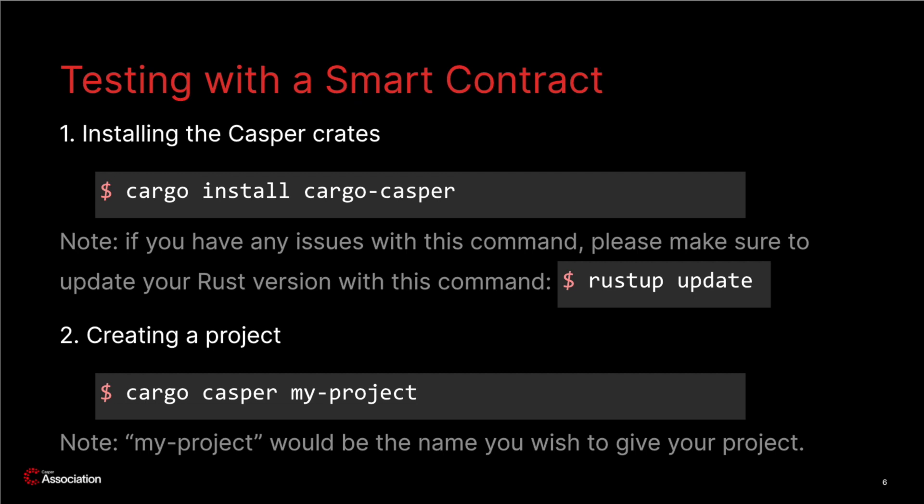So now we're ready to install the Casper Labs crates. In order to get started with Casper we need to use a Rust tool named Cargo. Cargo is a build system and package manager for Rust, much like PIP if you're familiar with Python. Using Cargo we can install the Casper Labs crates. A crate is a compilation unit which can be compiled into a binary or a library. So let's install them with the command: cargo install cargo-casper.